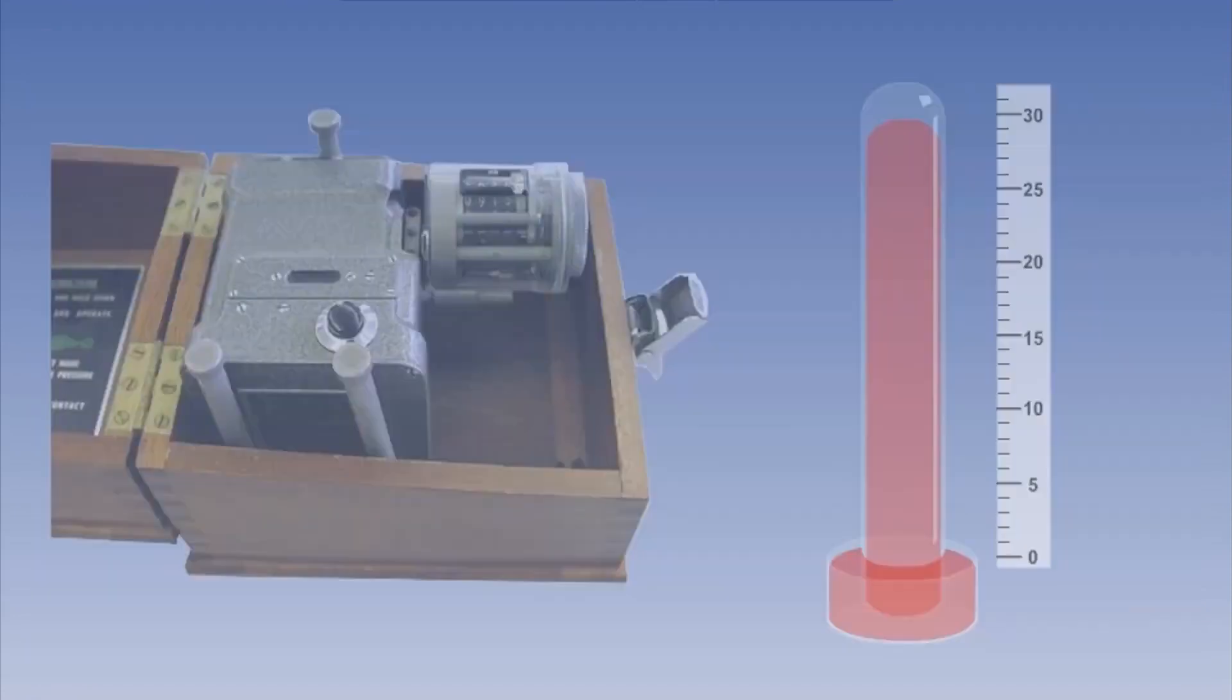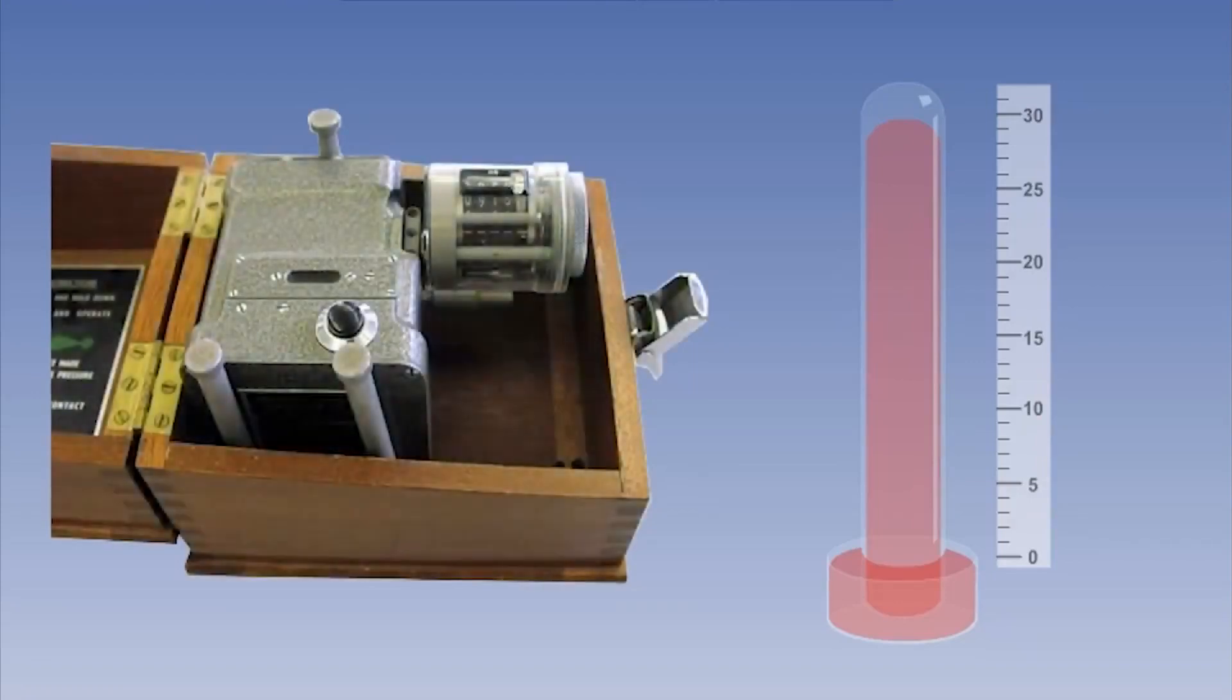We will now look at how pressure is measured and represented in meteorology. As we mentioned earlier, traditionally, pressure was measured using an instrument called a barometer. There are two types, an aneroid barometer and a mercury barometer.